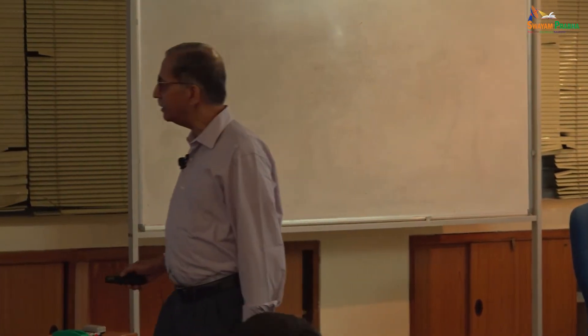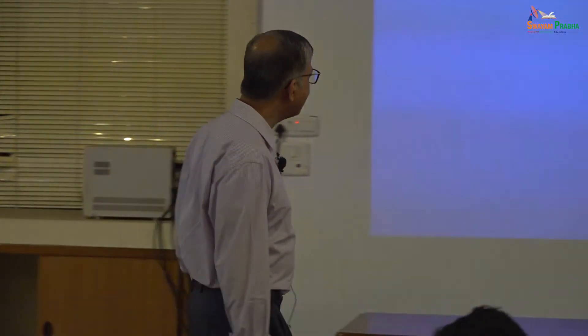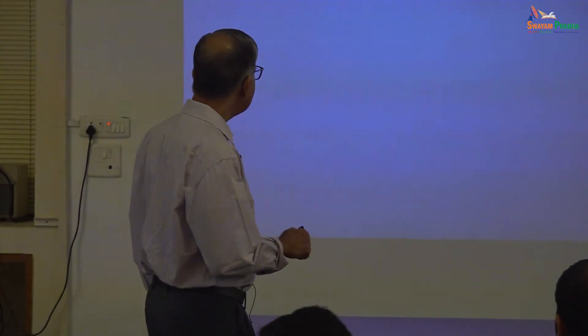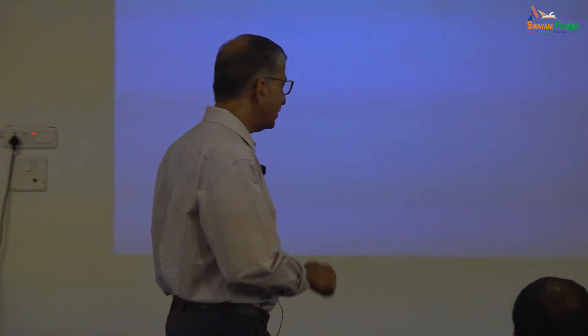Let's do another problem — a simply supported bent beam, simply supported. It has a gravity load on one side and a horizontal force acting on the other side. First, find the support reactions. We'll do it together so you will also get a taste of it.